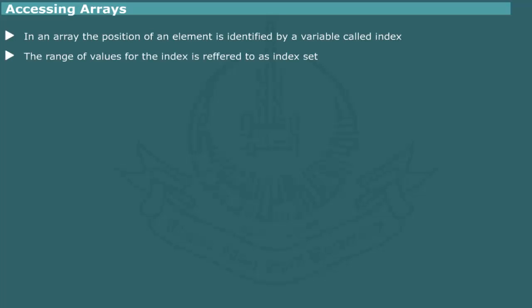Accessing array. Each array structure is identified by a unique name. The position of each element within the array is identified by a variable called index. The range of index is referred to as index set. For example, an array consisting of 10 elements would have an index set of integers varying from 1 to 10.